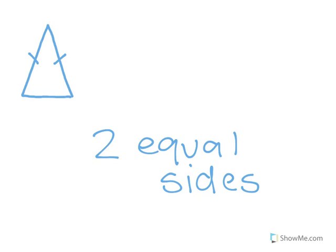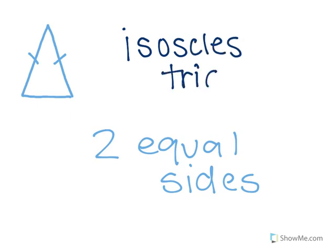You're right, this one is an isosceles triangle. An isosceles triangle has two equal sides.